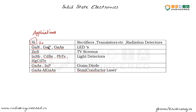Compounds like gallium nitride, gallium phosphide, and gallium arsenide go into the making of LEDs. Zinc sulfide is used in fluorescent TV screens. The Gunn diode is a microwave device, meaning semiconductor devices can operate at extremely high frequencies. Gallium arsenide and indium phosphide go into the making of Gunn diodes.